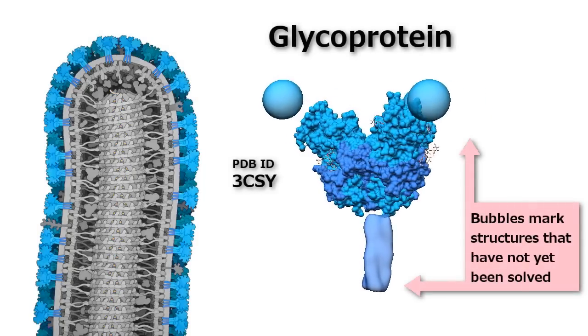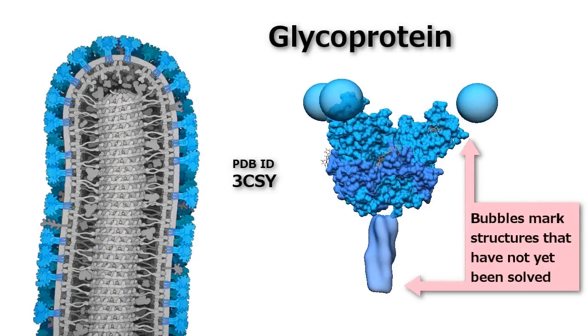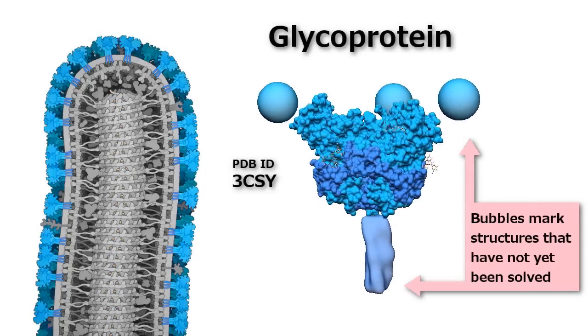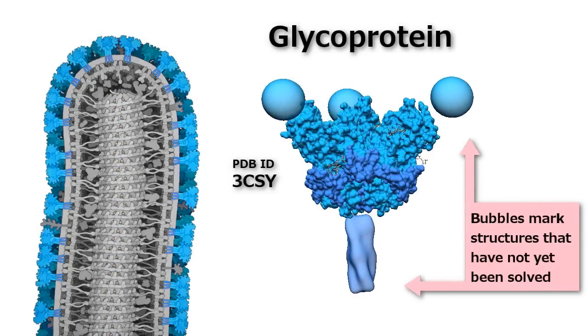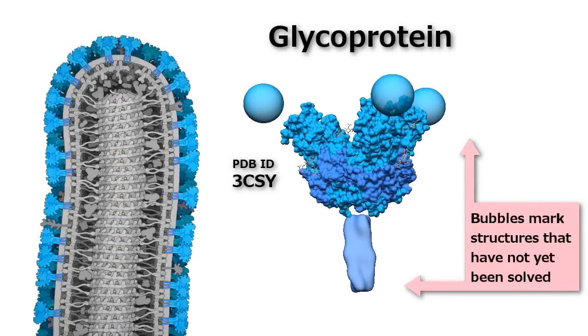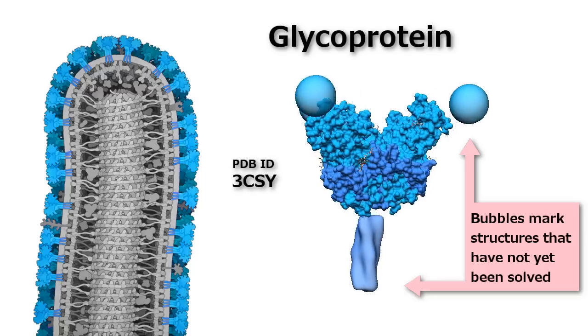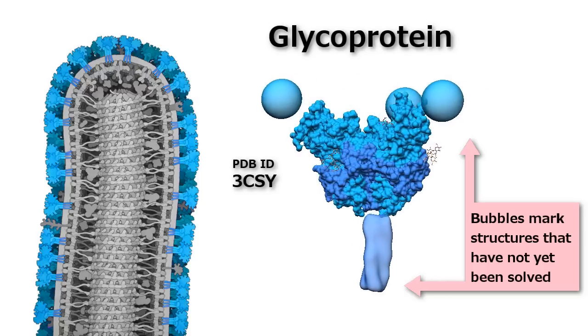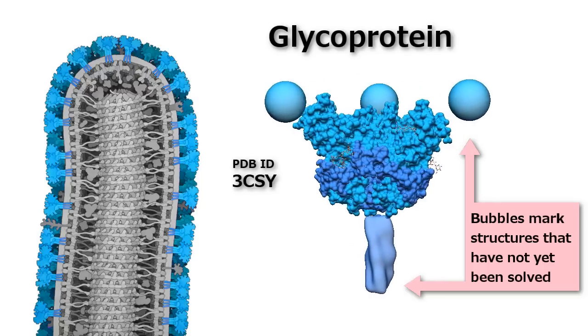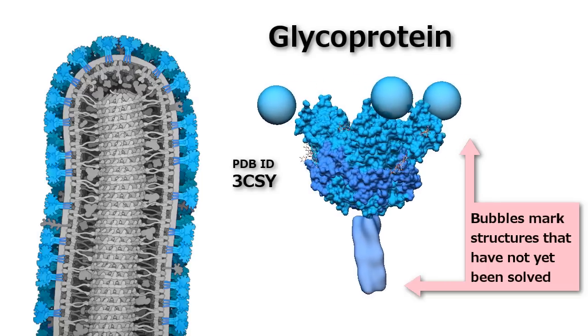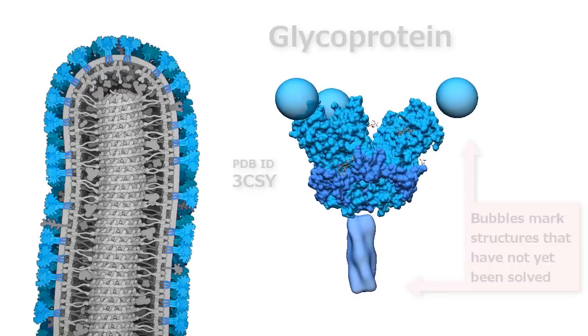The surface glycoprotein forms the coat of the virus, seeking host cell attachment points and facilitating invasion of the host cell. It is also the target of antibodies that the immune system raises to fight the Ebola virus.